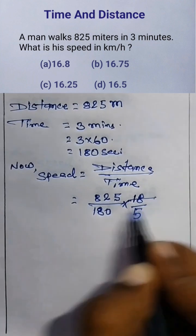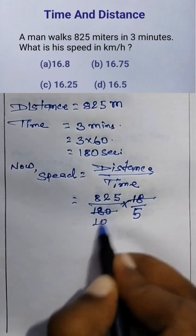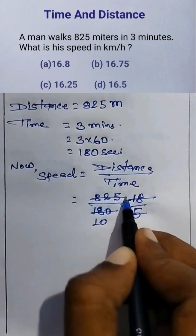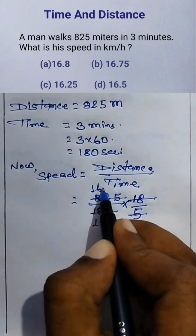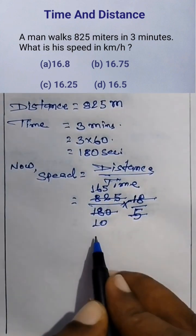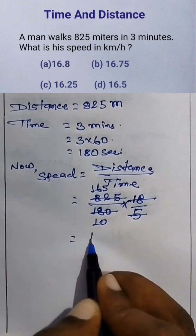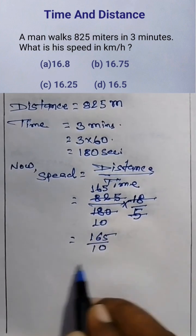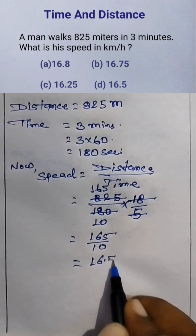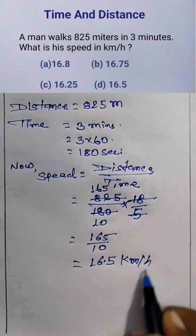18 times 10 times 185 multiplied gives 165, and 825 divided gives 165 by 10, which equals 16.5 kilometers per hour.